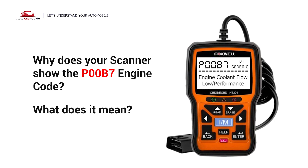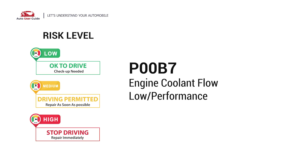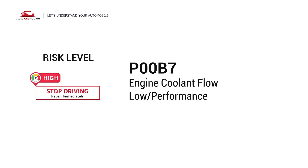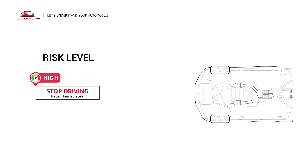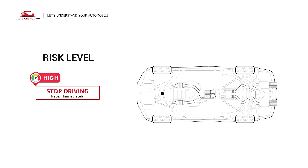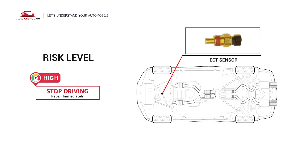Why does your scanner show the P00B7 engine code and what does it mean? The P00B7 engine code stands for engine coolant flow low or performance. It indicates that the powertrain control module perceives insufficient coolant flow through the cooling system, meaning the engine coolant flow is low or underperforming.